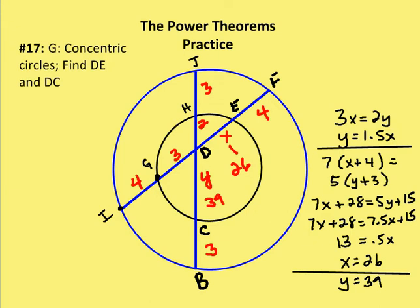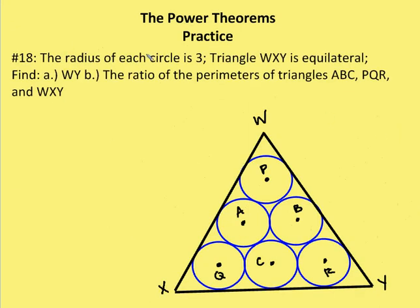Moving on to problem 18. The radius of each circle is three, and triangle WXY is equilateral. We want to find the length of WY, and then the ratio of the perimeters of triangles ABC, PQR, and WXY.